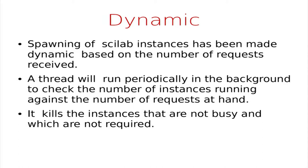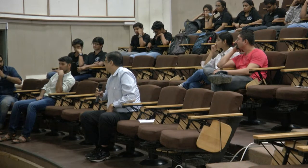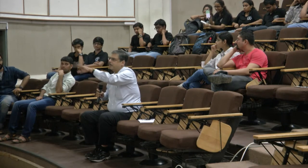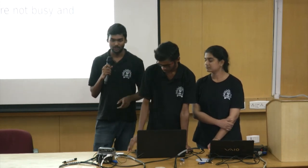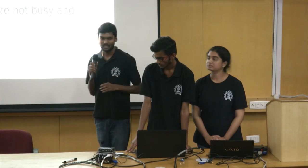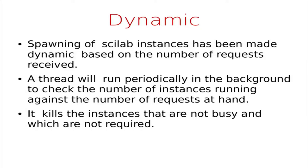Implementation of the project is achieved in two stages. In stage 1, we kept all Scilab instances available in the backend so that loading of all Scilab libraries for each request is avoided. In stage 2, organization of Scilab instances is made dynamic — meaning we spawn Scilab instances based on the busyness of the server.